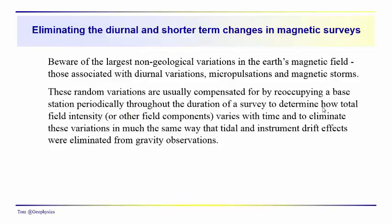These short-term variations are random and represent your largest non-geological variations to compensate for. We would usually do this by reoccupying a base station periodically throughout the duration of your survey — just like we did with gravity — and correcting your data relative to those variations in magnetic field intensity measured at the base station. Much the same way we handled tide and instrument drift with gravity observations, for most local surveys this is the one correction you really want to pay attention to.